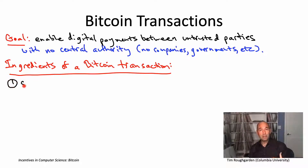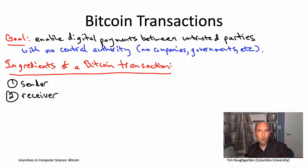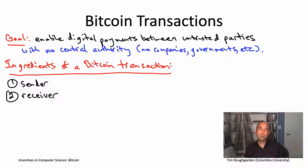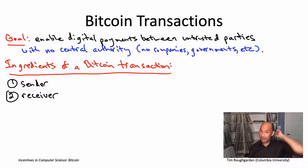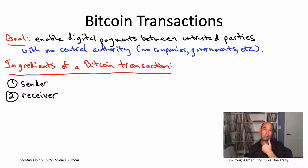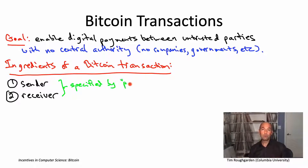So first of all, you need to know who's sending the funds and who is receiving the funds — you have a sender and a receiver. You can actually have multiple senders and multiple receivers if you want, but for simplicity, let's just think of a transfer as being from one sender to one receiver. So how do you specify who the sender and receiver are? Well, in Bitcoin, you do not write down your name or your social security number or anything else which could link your Bitcoin account to a real-world identity. Rather, on Bitcoin, users are identified only through a long, inscrutable sequence of bits — a sequence of zeros and ones — which is called the user's public key.